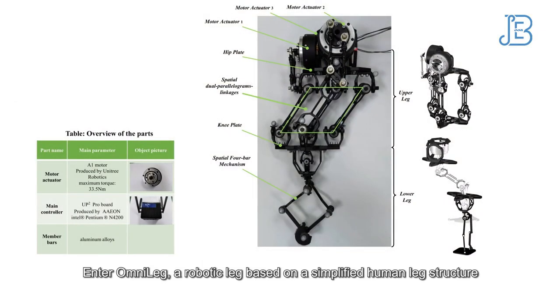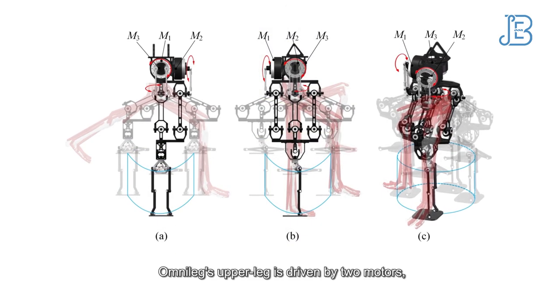Enter OmniLeg, a robotic leg based on a simplified human leg structure. OmniLeg's upper leg is driven by two motors,